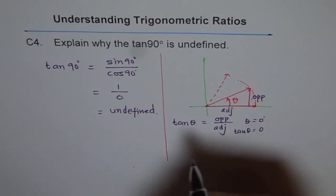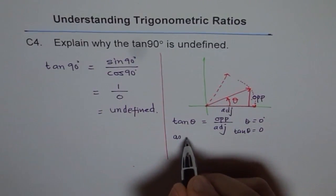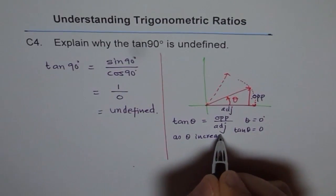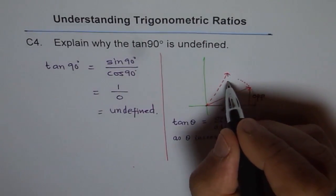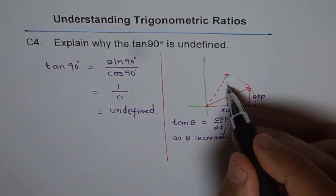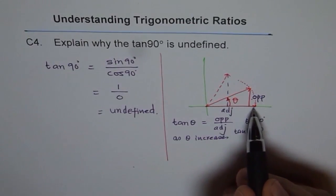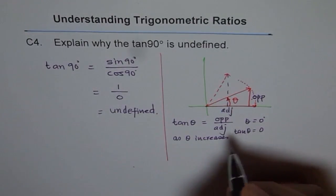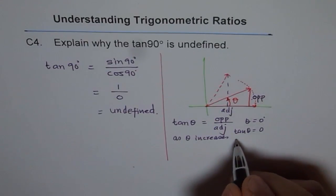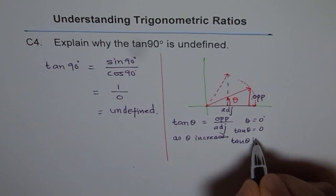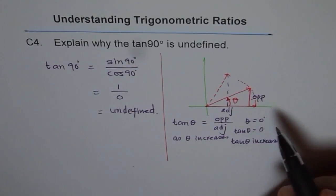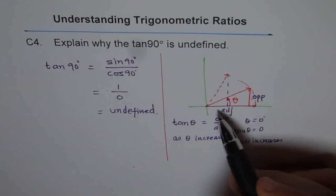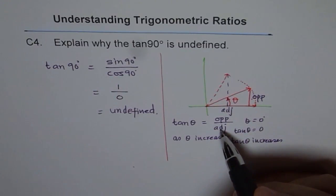Now, what happens if theta increases? As theta increases, the opposite side increases quite a bit and the adjacent side decreases quite a bit. Therefore, as theta increases, tan theta increases at a very high rate, since the opposite side increases and the adjacent decreases — and you are dividing by the adjacent, which is decreasing.